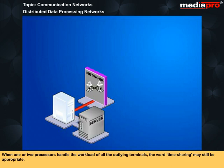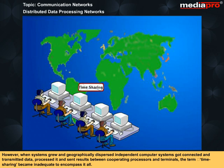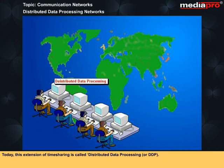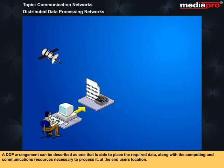When one or two processors handle the workload of all the outlying terminals, the word time-sharing may still be appropriate. However, when systems grew and geographically dispersed independent computer systems got connected, transmitted data, processed it, and sent results between cooperating processors and terminals, the term time-sharing became inadequate. Today, this extension of time-sharing is called Distributed Data Processing, or DDP. A DDP arrangement can be described as one that is able to place the required data along with the computing and communications resources necessary to process it at the end user's location.